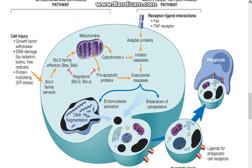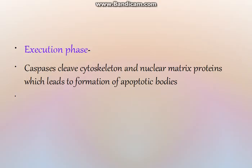This was an overview of both pathways in apoptosis. In the execution phase, the caspases have been activated. They cleave the cytoskeleton of the cell and the nuclear matrix proteins, leading to the formation of apoptotic bodies.